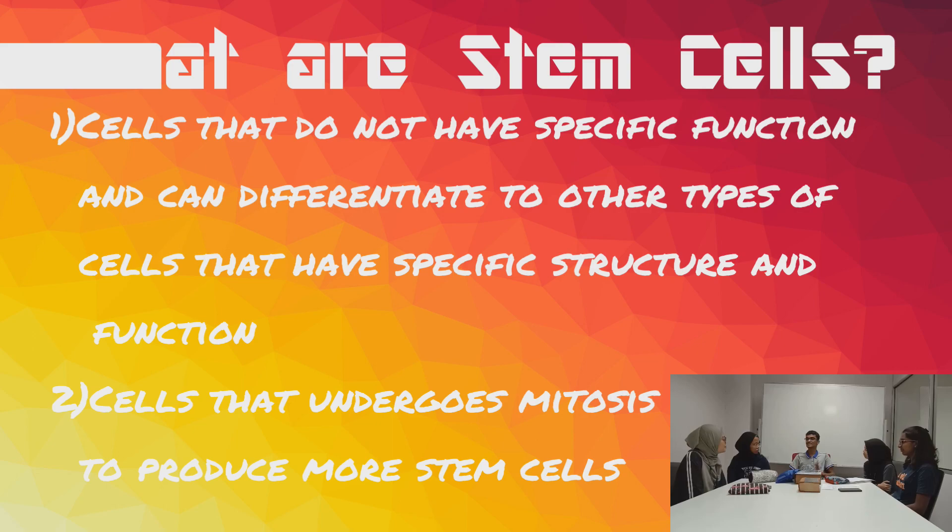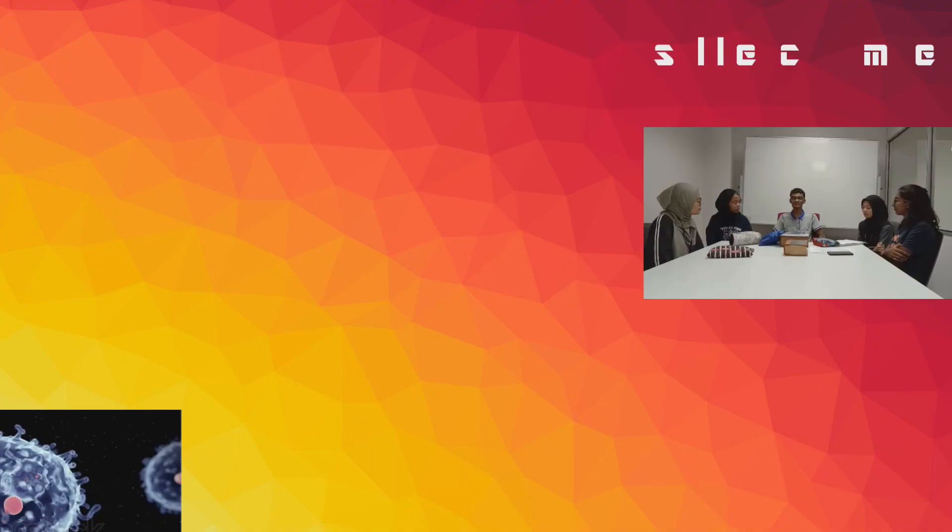What is a stem cell, Devin? Stem cells are cells that don't have a specific role — they differentiate to form other types of cells with specific structure and function. That's interesting. Where do these cells originate from?